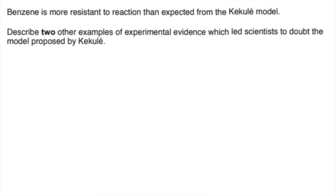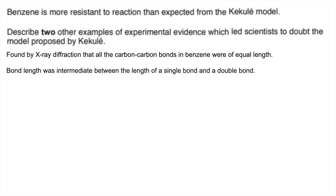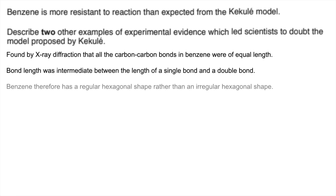The first piece of evidence is the one around bond lengths, found by X-ray diffraction. All the carbon-carbon bonds in benzene were of equal length. The bond length was intermediate between the length of a carbon-carbon single bond and a carbon-carbon double bond. Therefore benzene has a regular hexagonal shape rather than an irregular hexagonal shape.